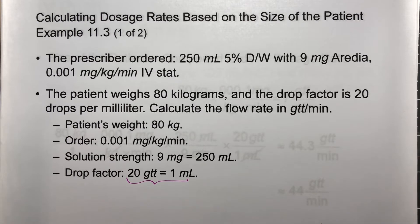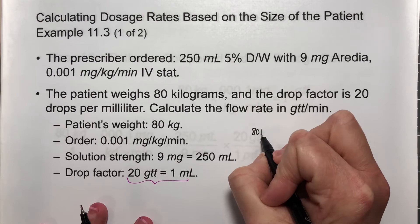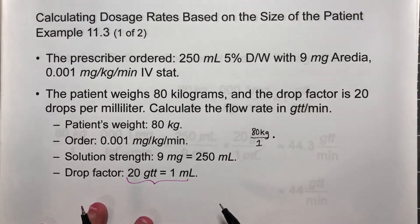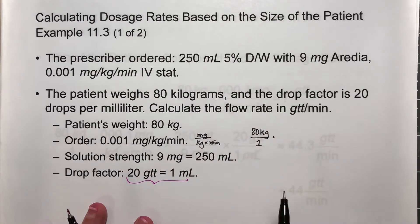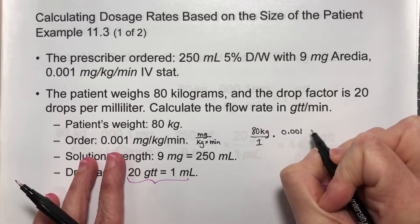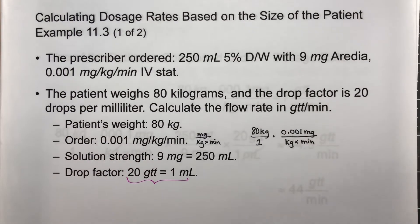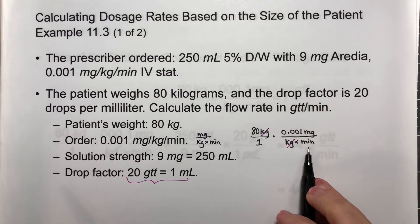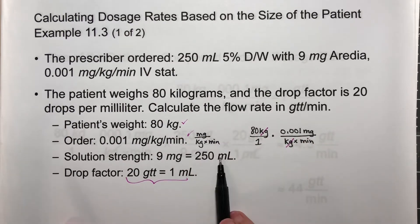Let's try some of this information. I'm supposed to end up with this unit. So let's start off with the weight: I have 80 kilograms over 1. Now I want to get rid of kilograms because it's in the top and I definitely don't need that. Remember that this unit is milligrams for kilogram times minute. This has kilograms in the bottom. I need to cancel that out, so I'm going to multiply by this: 0.001 milligrams per kilogram per minute. This is going to allow us to cancel out the kilograms.